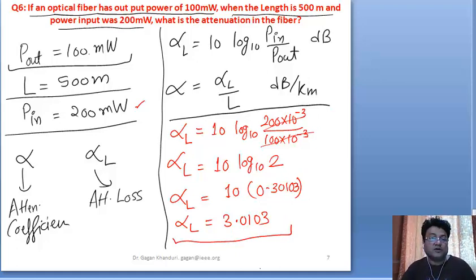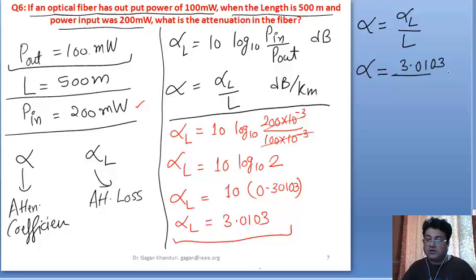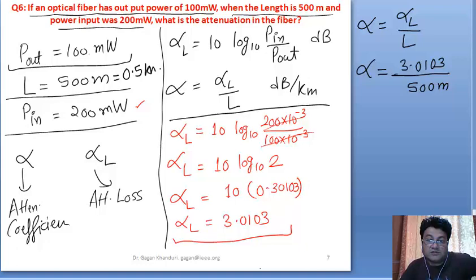If I'm going to find the attenuation coefficient, alpha equals alpha_L/L. Alpha equals 3.0103 divided by L, which is given as 500 meters. Remember 500 meters is 0.5 kilometers because this unit is in kilometers.